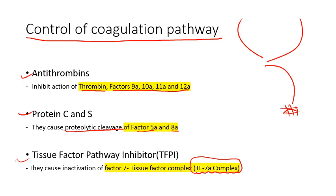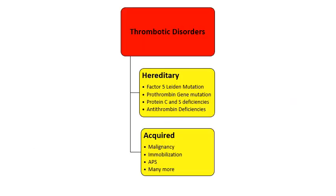There are various ways to classify thrombotic disorders. In this video I use a hereditary versus acquired classification. Hereditary disorders include: factor 5 Leiden mutation, prothrombin gene mutation, protein C and S deficiencies, and antithrombin deficiencies. Acquired disorders include malignancy (especially adenocarcinomas), immobilization after surgery, antiphospholipid antibody syndrome, and others such as oral contraceptive use.